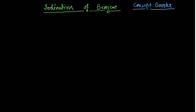In my last lecture on this concept booster series, I made a video on the difference between resonance and the mesomeric effect. Today I am going to discuss the iodination of benzene, and why I chose this particular topic — because iodination of benzene is somewhat different from fluorination or bromination of benzene.